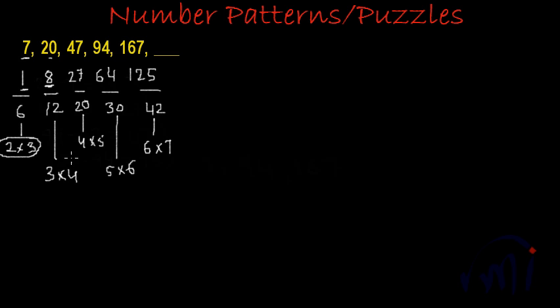What can we write from here for the nth term? The nth term Tn is equal to n cubed plus (n+1) multiplied by (n+2). 125 plus 42, and 42 is nothing but 6 multiplied by 7.